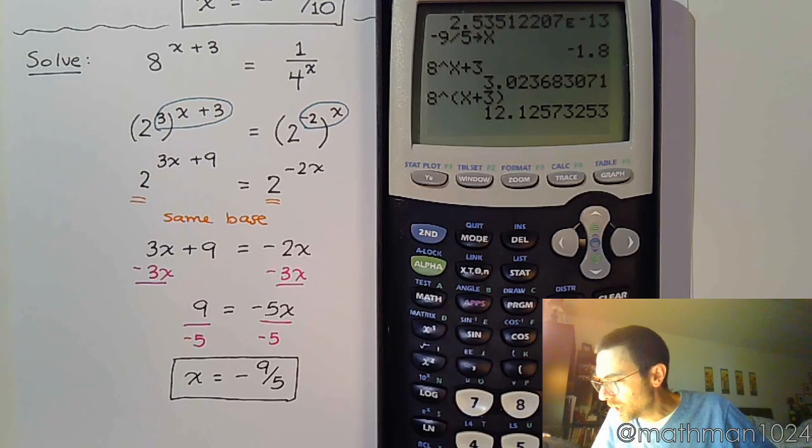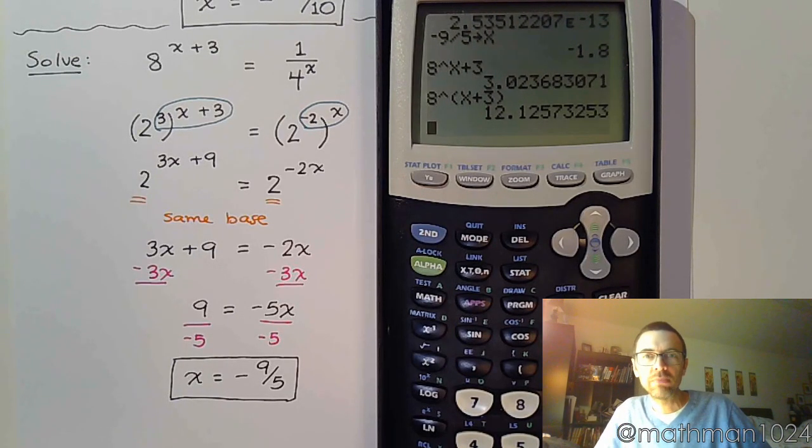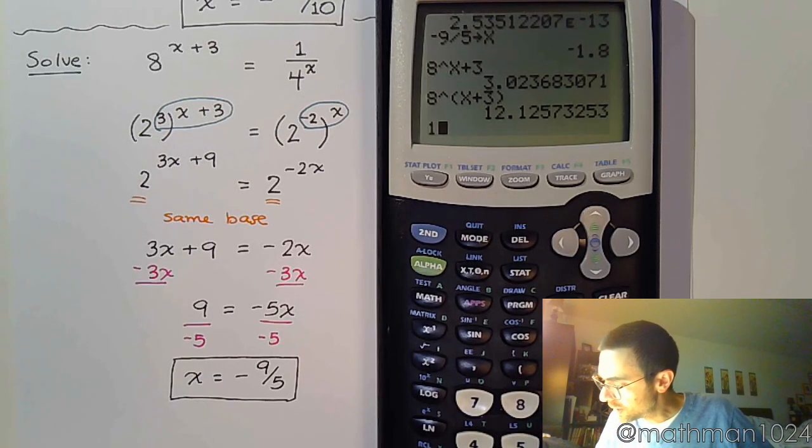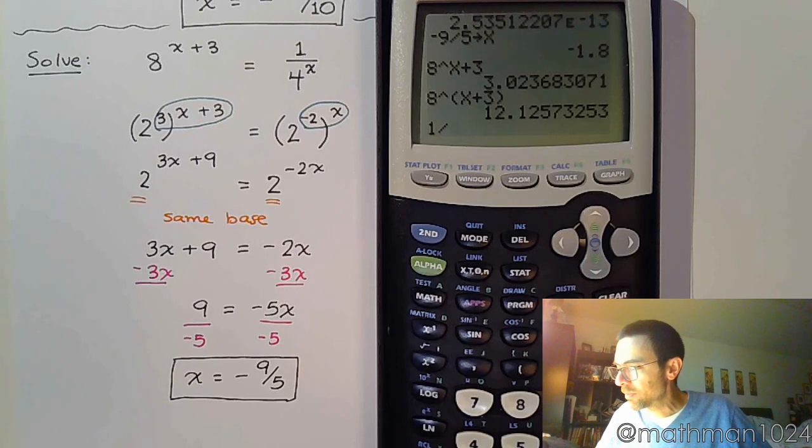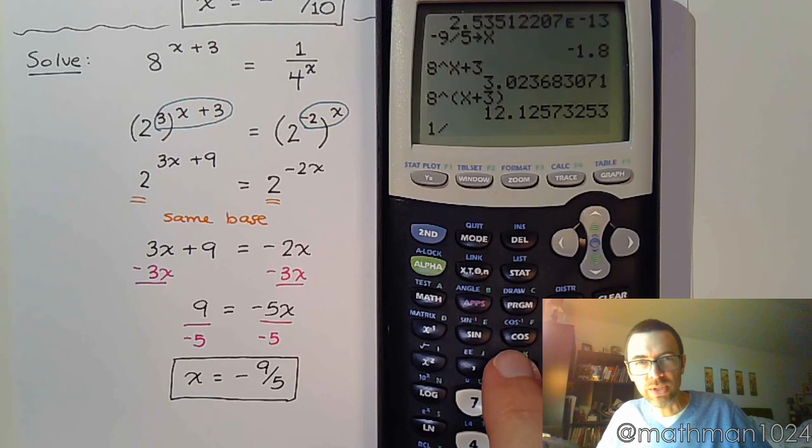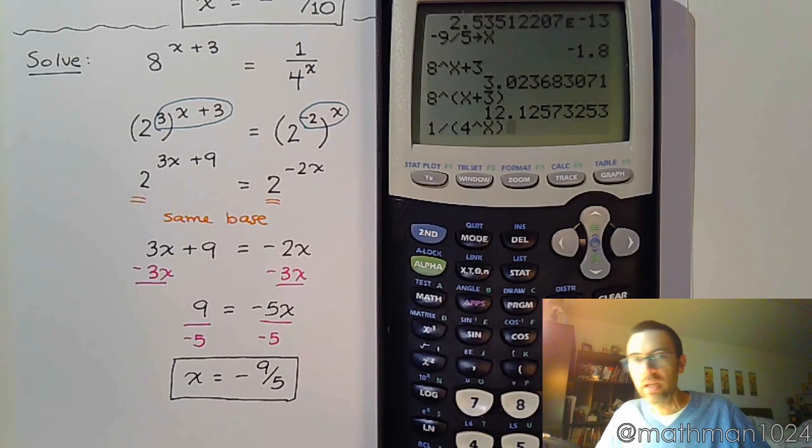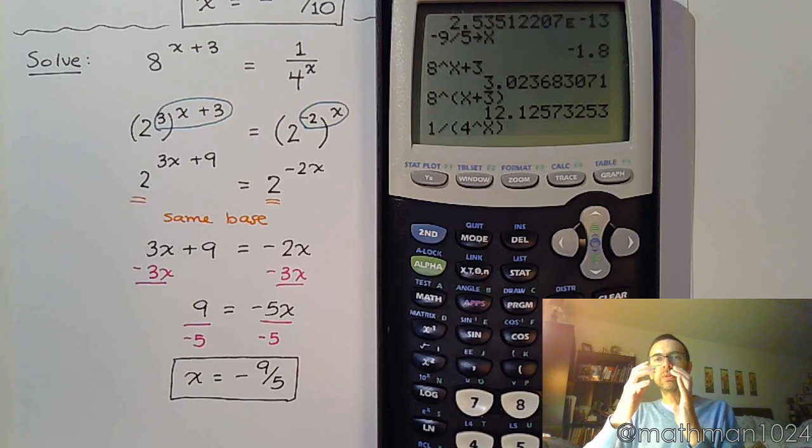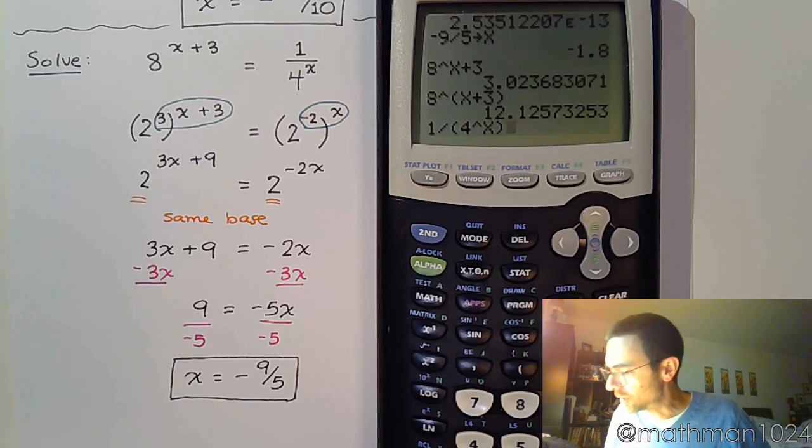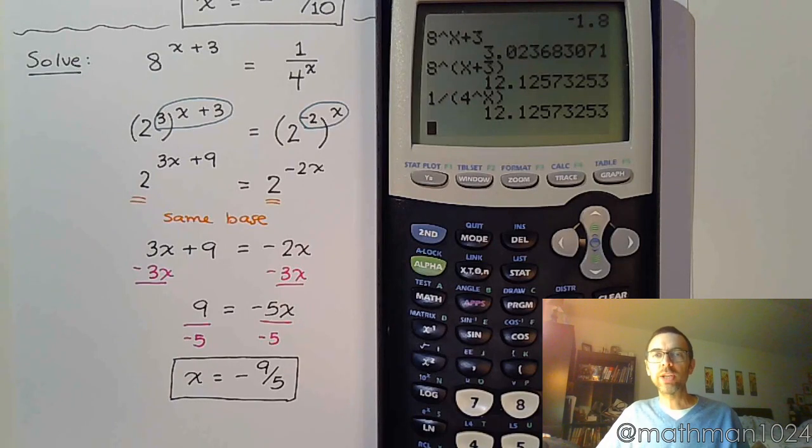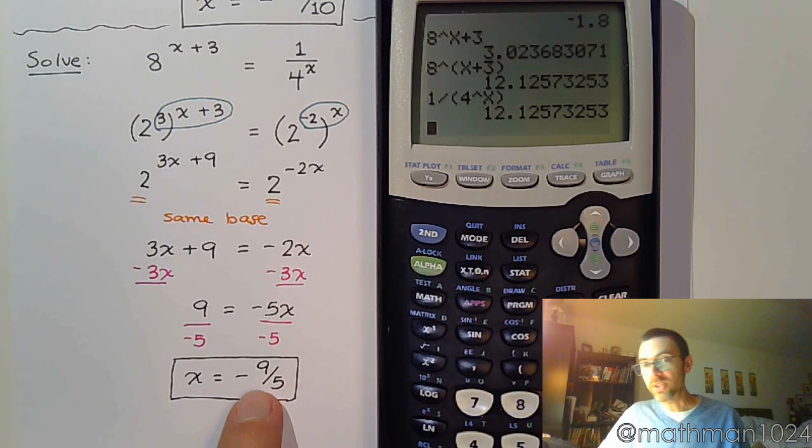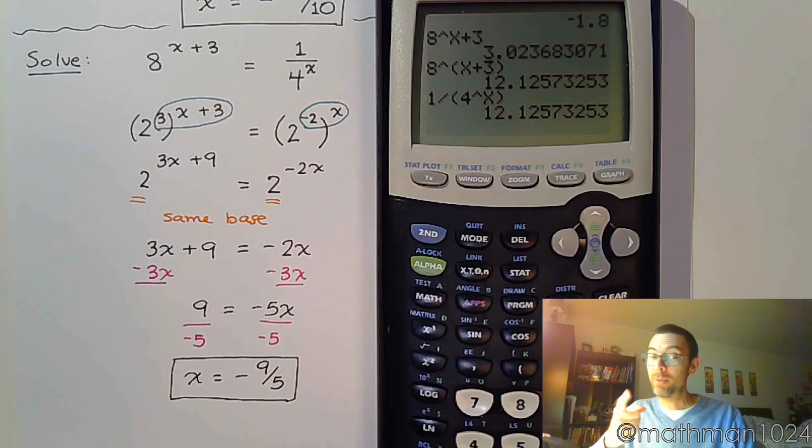All right. So, I get 12 point stuff, right? I don't really care too much about that stuff. And, then, I have 1 divided by, I'm going to do parentheses just to be on the safe side here. That's going to be 4 raised to the x. So, we've got 4 to the x all encased inside that denominator. Let's see what we get. And, we get the same decimal value. So, that tells me that this answer, this answer is correct. I'm feeling pretty good. How about you?